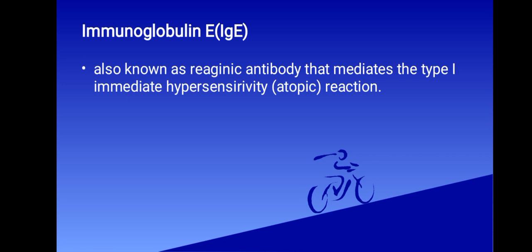Immunoglobulin E, also known as reagenic antibody, mediates the type I immediate hypersensitivity, that is the atopic reaction. It is mostly found extravascularly in the lining of the respiratory and intestinal tracts. IgE plays an important role in protection against parasitic infection and also activates type I hypersensitivity, that is the anaphylactic reaction.